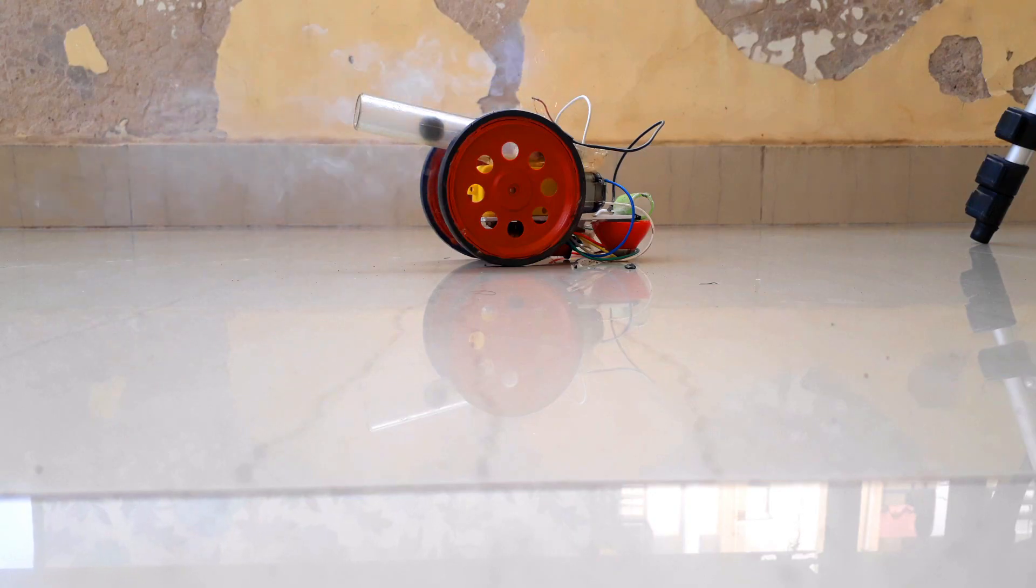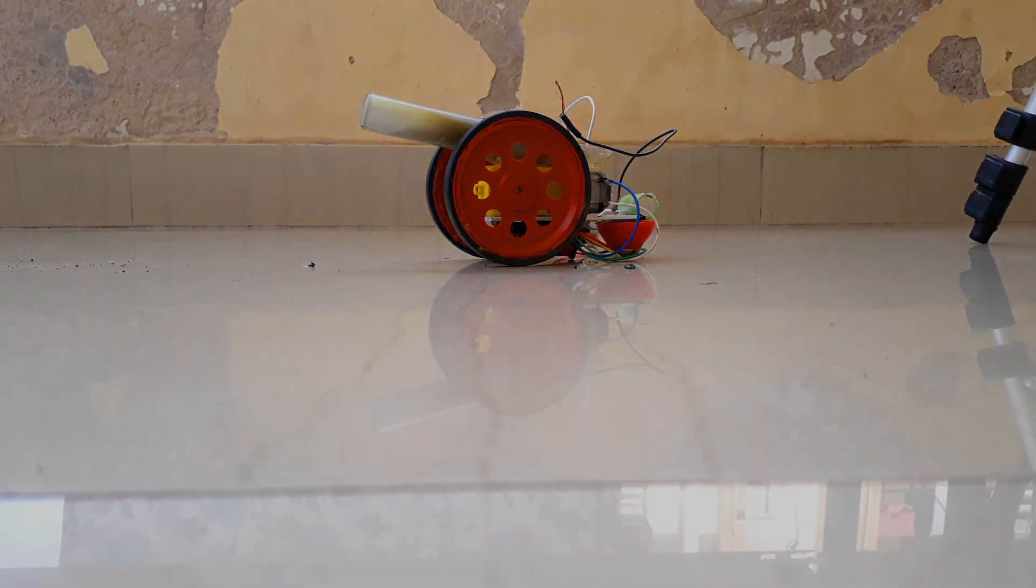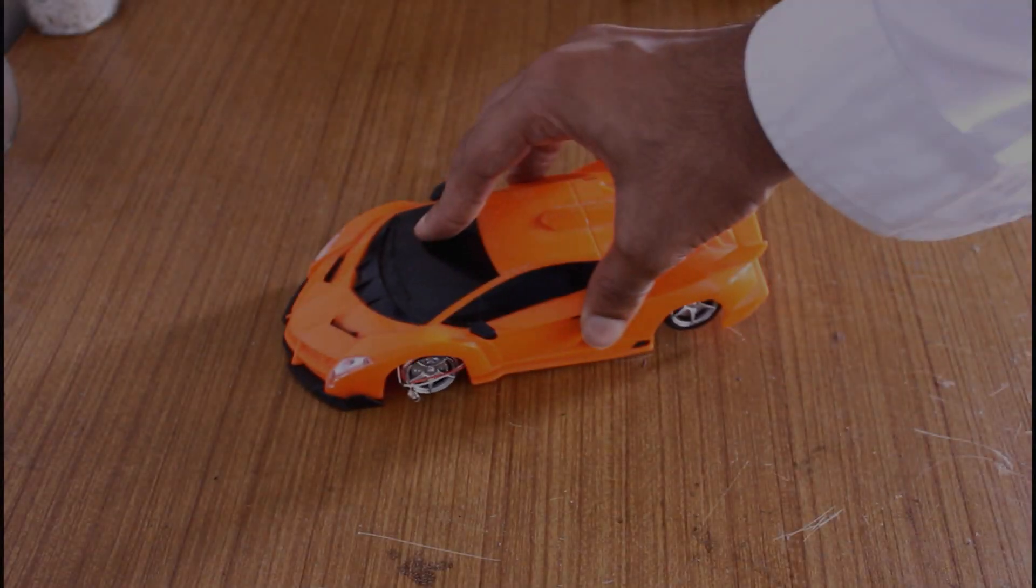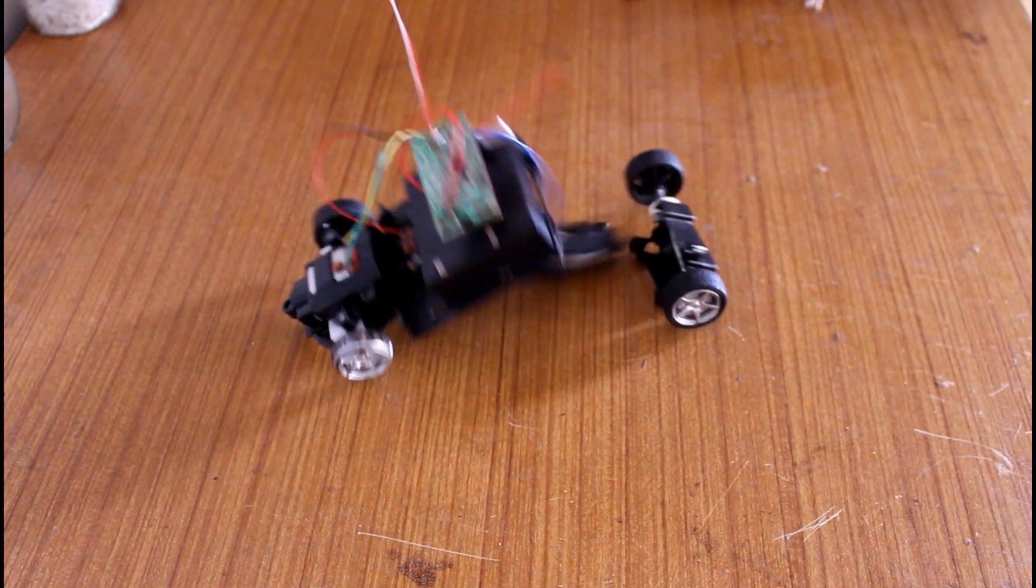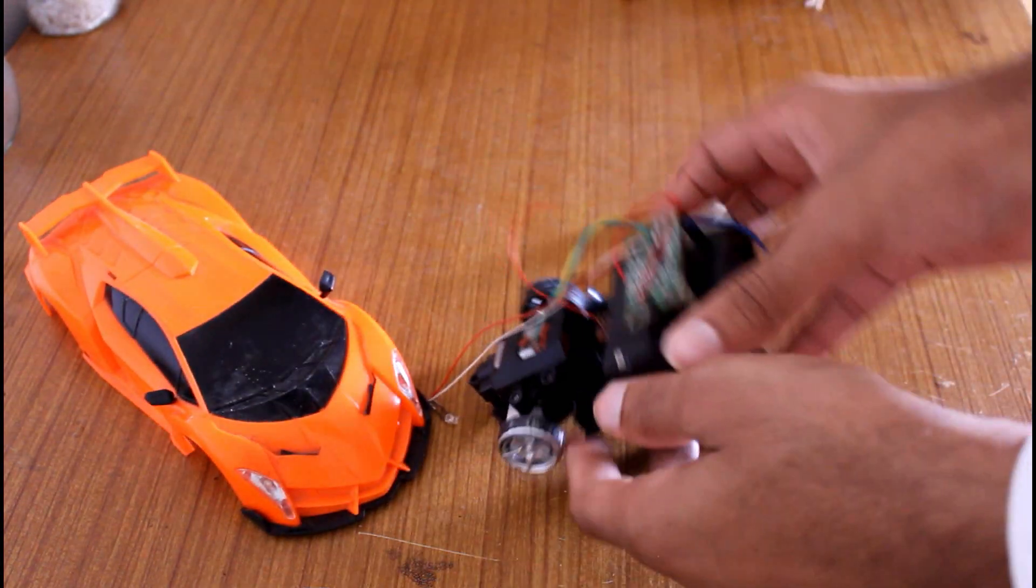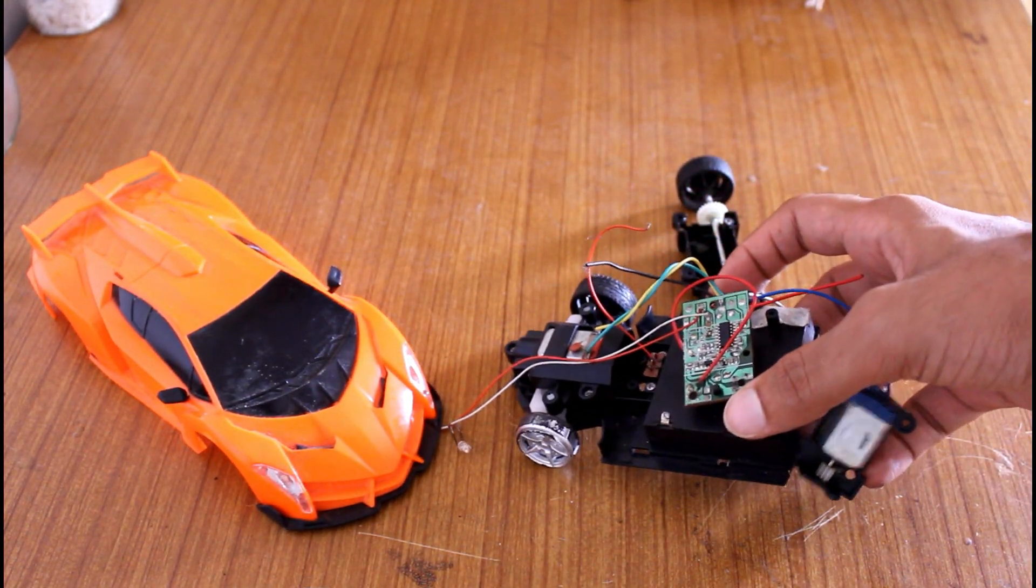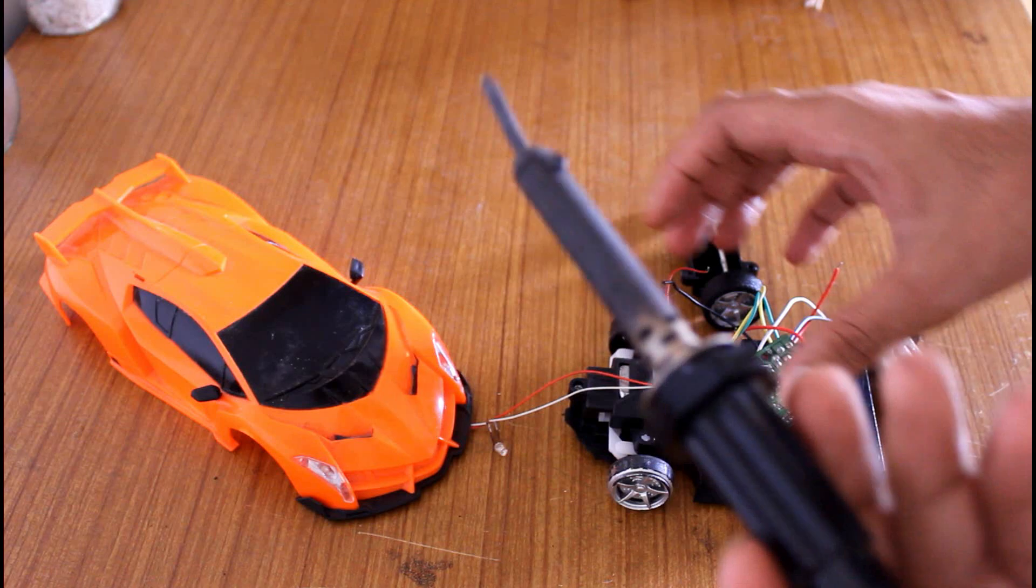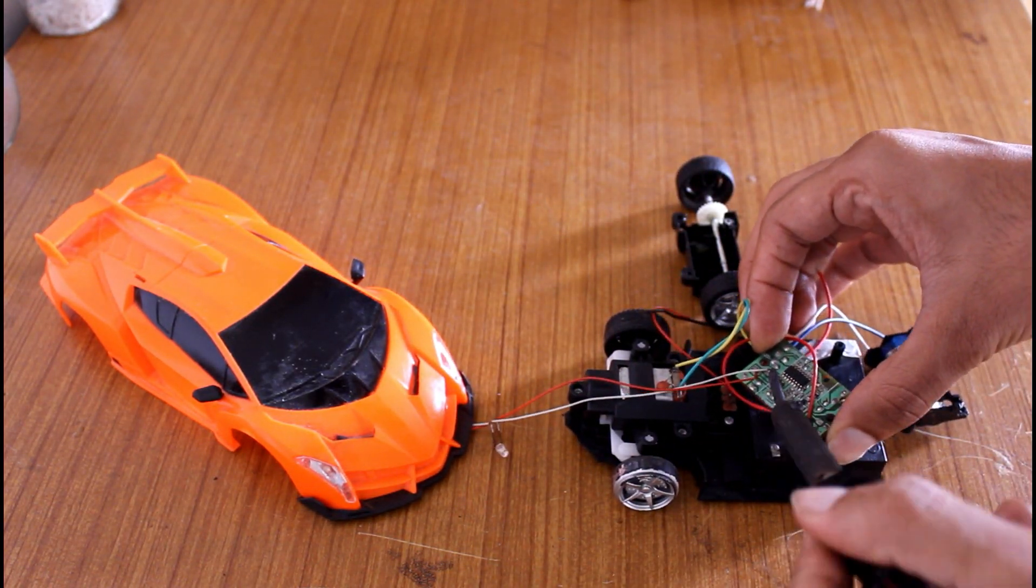We are going to make a remote control cannon. For that I am using a circuit from this car. I need this receiver circuit and I will remove everything else.